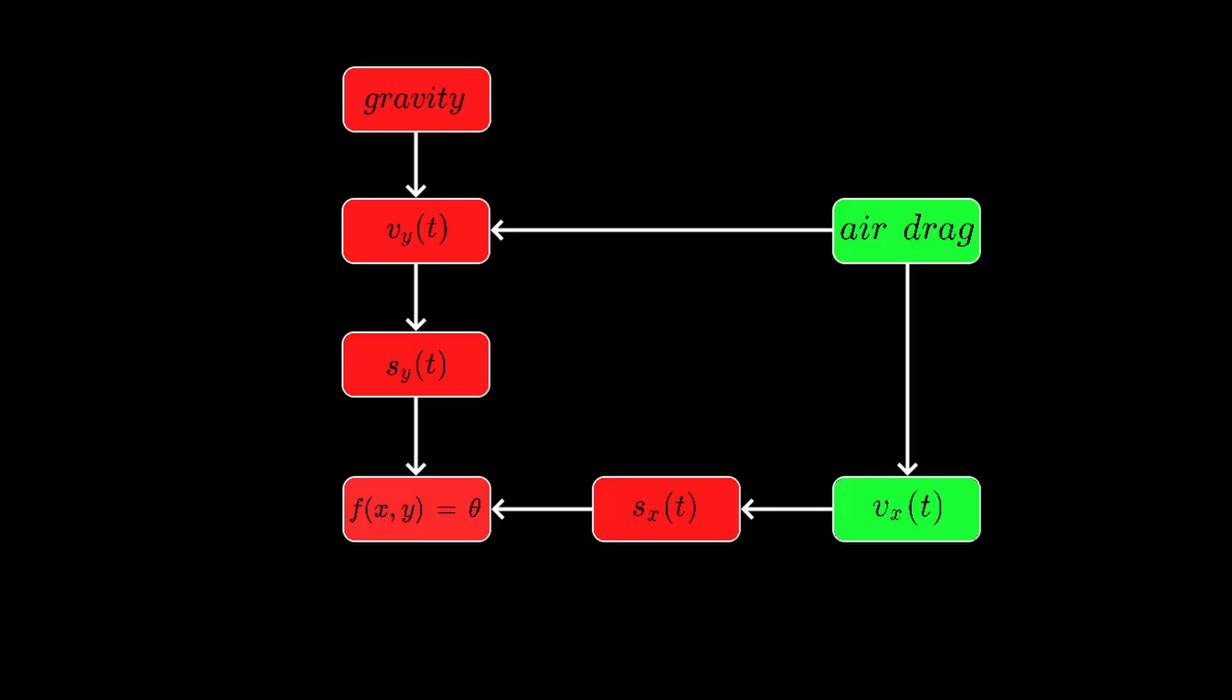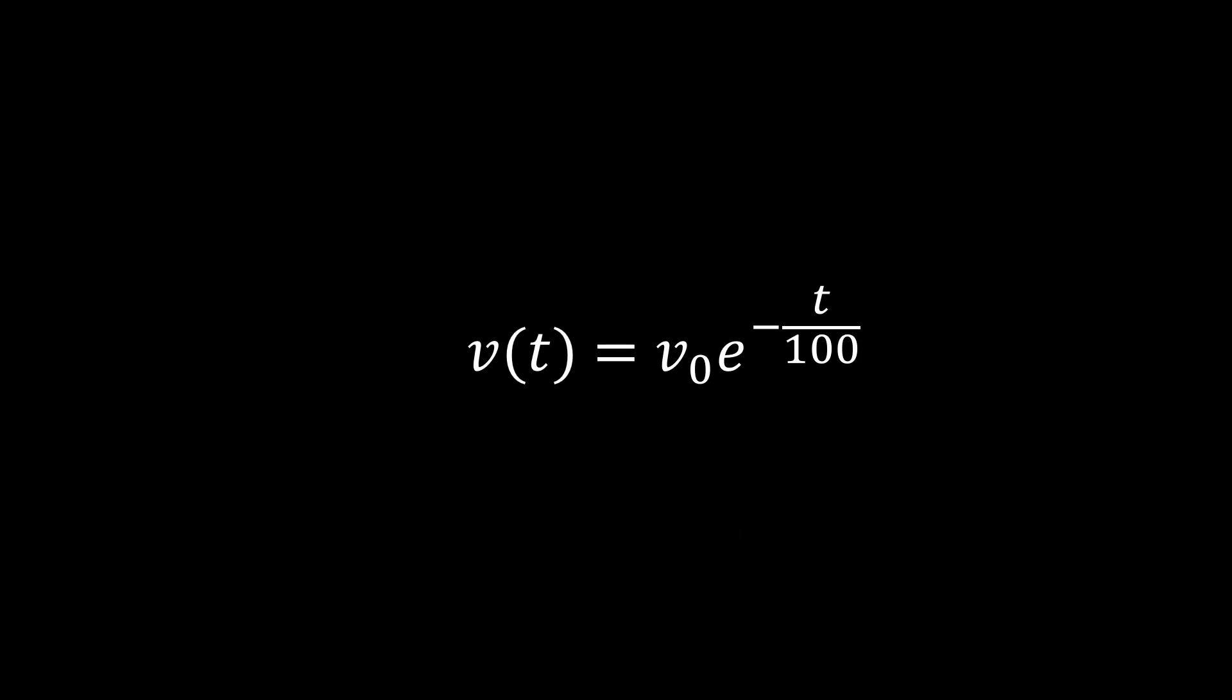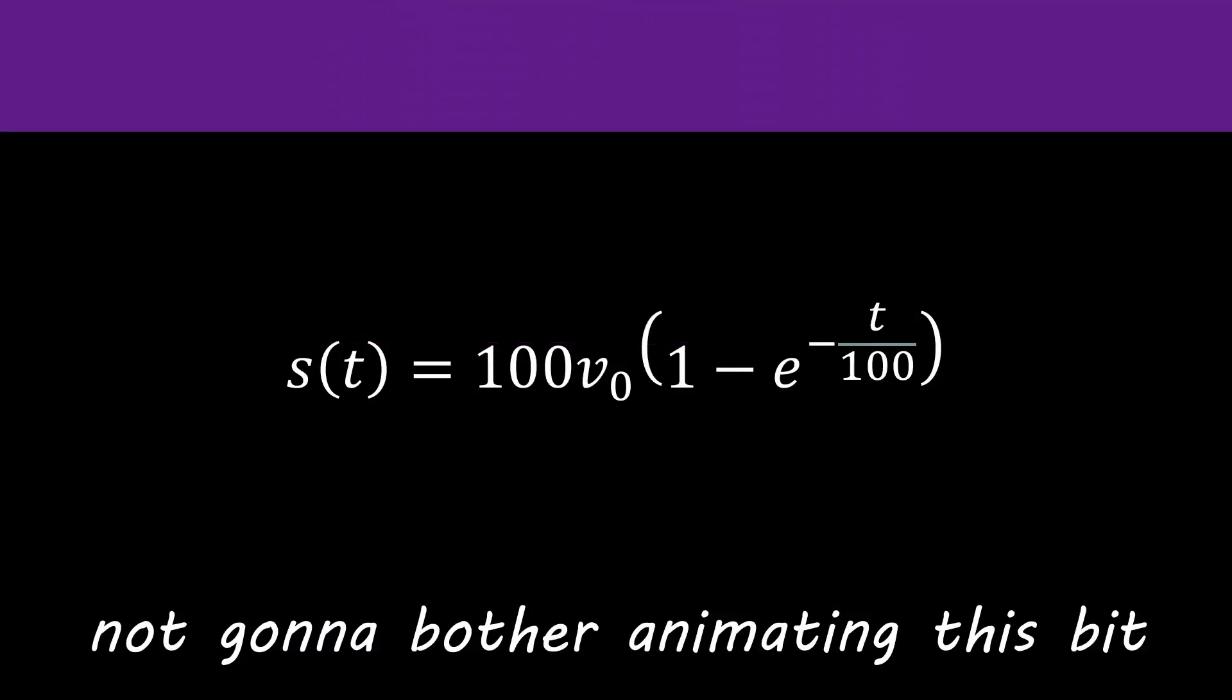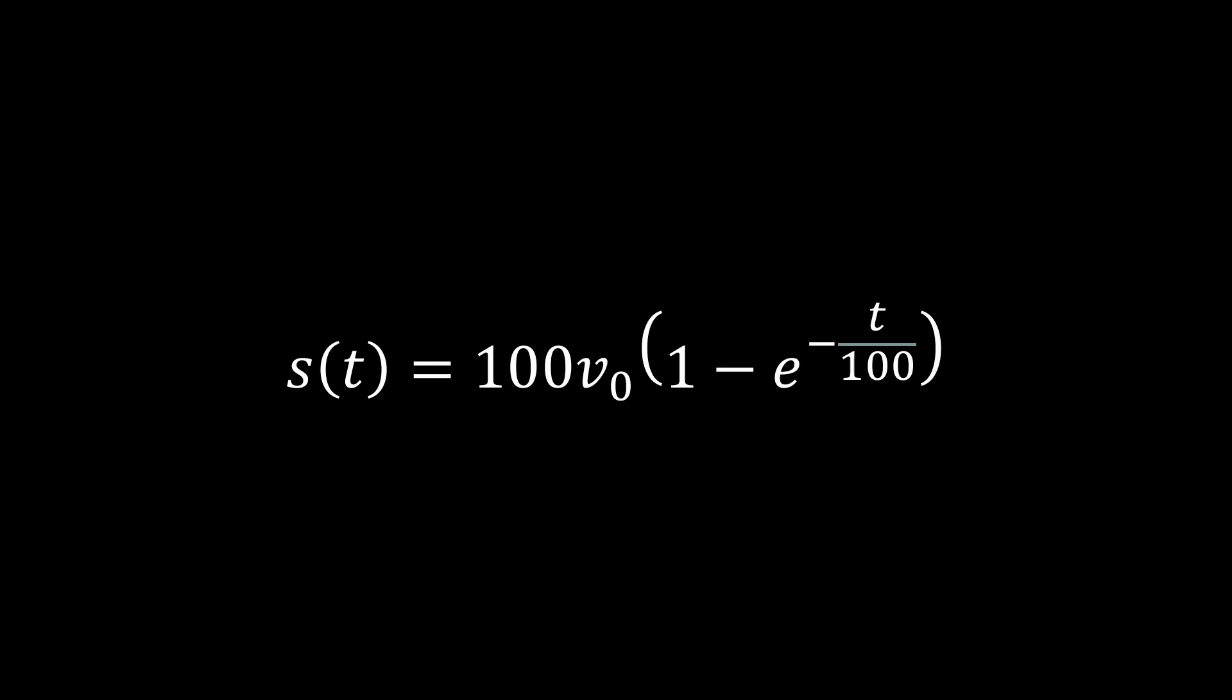No, we're not even halfway done. We want the displacement as a function of time, so we do this over again. V is ds over dt, plug that in, bring that to this side, and integrate. We do the u-substitution thing, and finally evaluate the different integrals. So now we have the horizontal displacement as a function of time. Keep this function in mind.